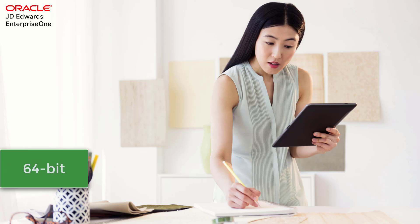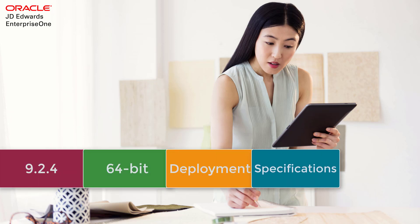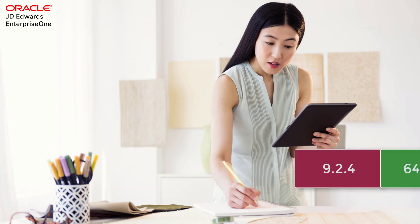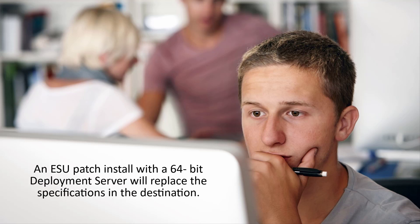In Tools Release 9.2.4 with a 64-bit deployment server, the handling of specifications is changed. An ESU install with a 32-bit deployment server performs an automated specification merge for business views, tables, and batch specifications. An ESU install with a 64-bit deployment server will replace the specifications in the destination.